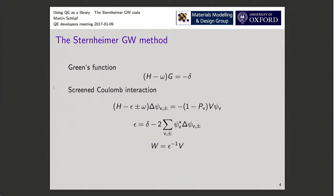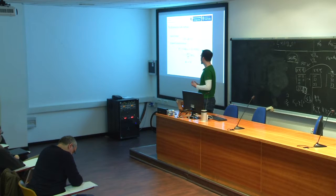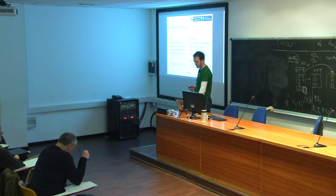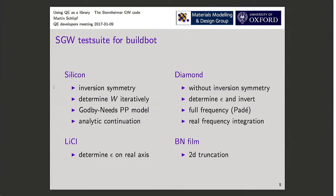There's an alternative method where you iterate this, so you can take the density response and put it back in on the other side times the Coulomb potential. This also gives you directly the screened Coulomb interaction, and you don't need the matrix inversion.